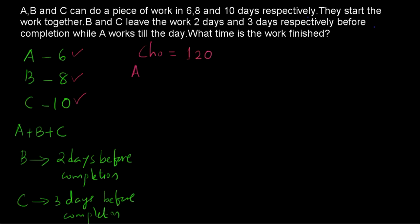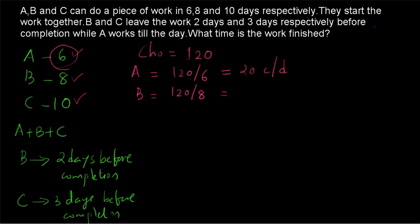A will be having 120 divided by 6. Since A is taking 6 days to complete 120 chocolates, A will be having 120 divided by 6, which is equal to 20 chocolates per day. Then what about B? B will be taking 8 days to complete 120 chocolates, therefore B will be having 120 by 8, which is equal to 15 chocolates per day. And C is completing 120 chocolates in 10 days, so C will be having 120 by 10, which is equal to 12 chocolates per day.